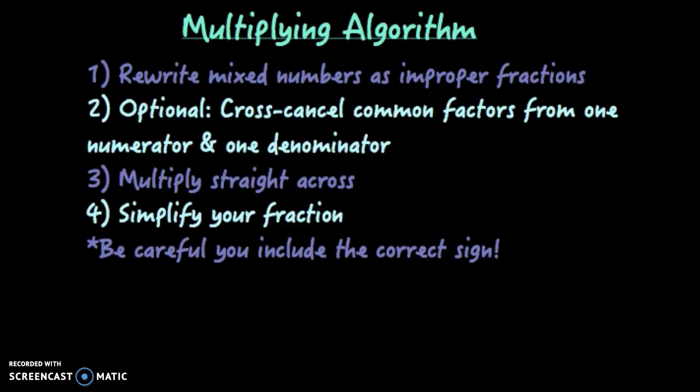Our algorithm for multiplying is to first rewrite all your mixed numbers as improper fractions. Second, this is optional but I think it makes problems a lot simpler, cross-cancel your common factors from one numerator and one denominator. You could even do that just simplifying a single fraction as well.